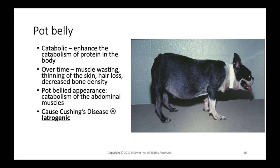Long-term corticosteroid use can cause iatrogenic Cushing's disease — meaning we caused it. By continuously supplementing with exogenous corticosteroids, the body perceives it has excess adrenal hormones, resulting in hyperadrenocorticism.